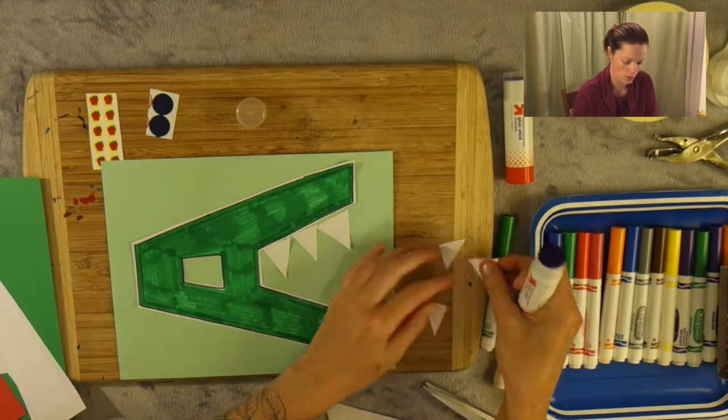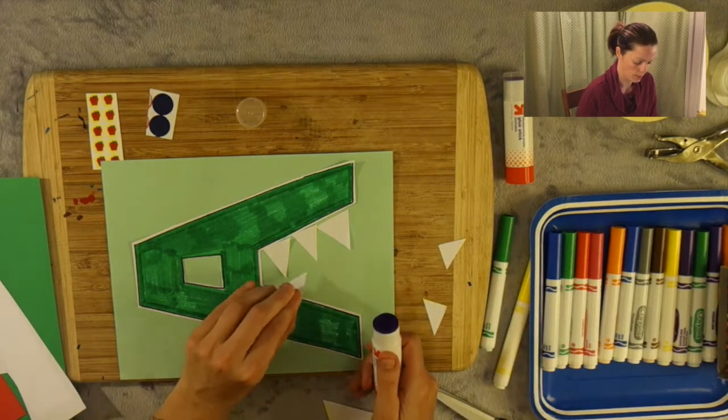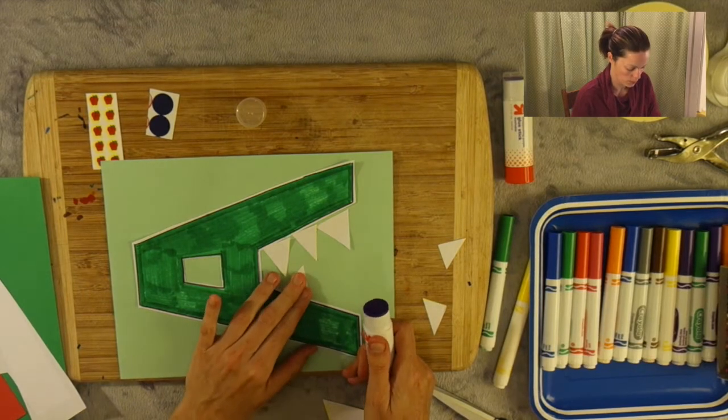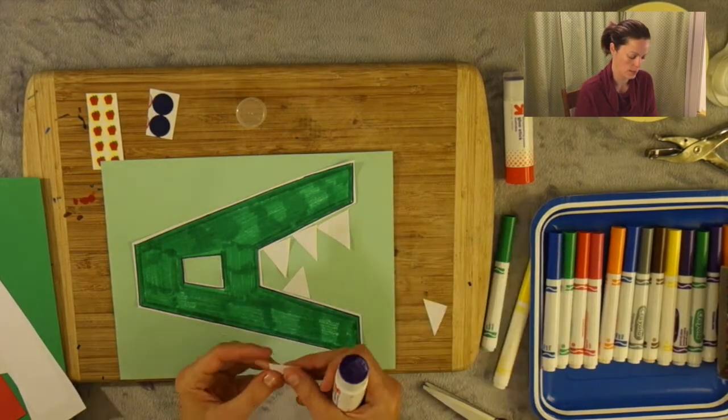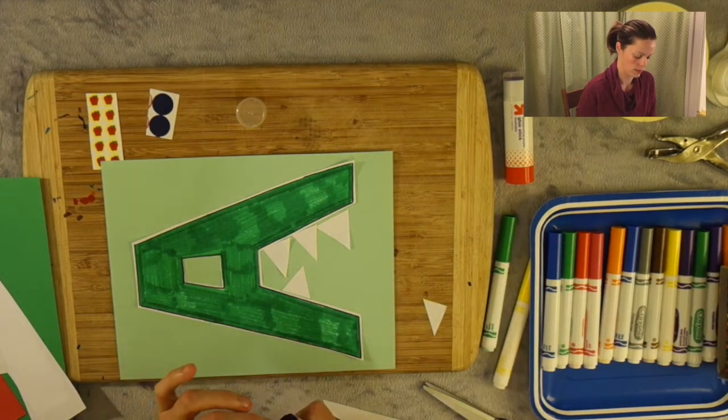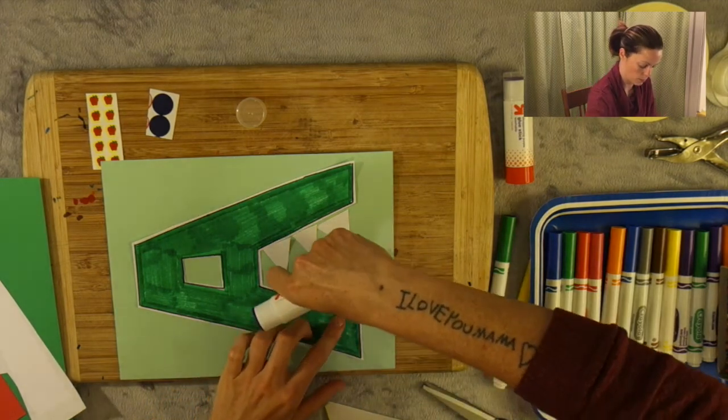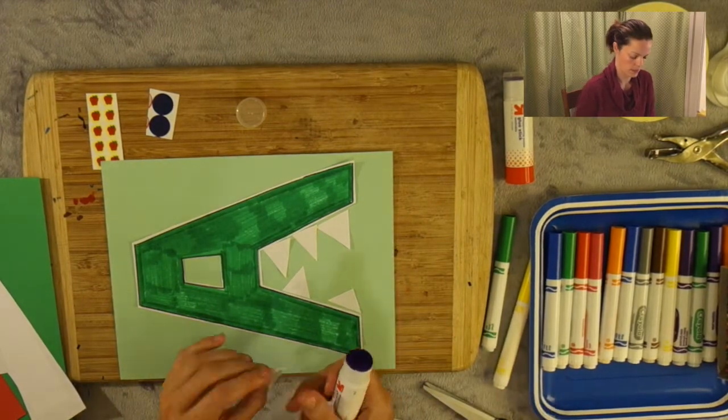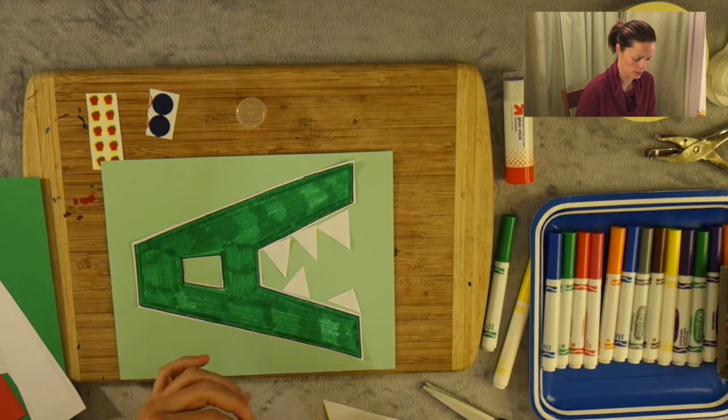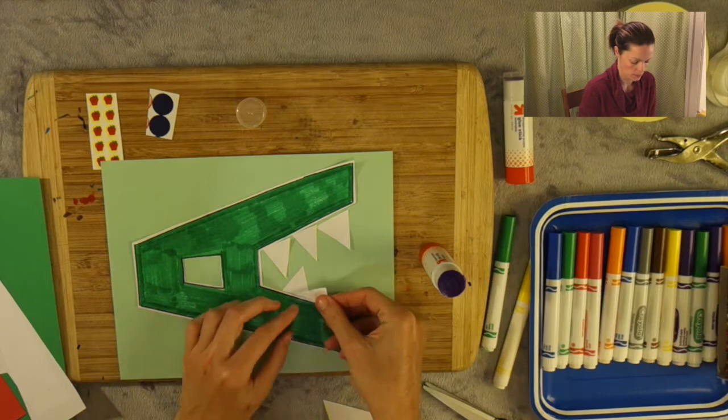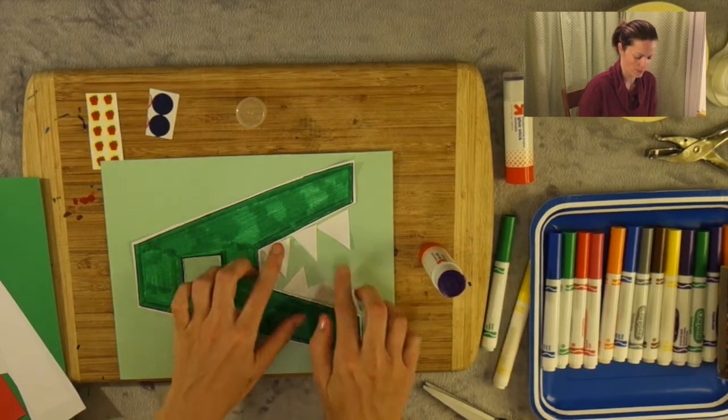So let's go ahead and do it again. Let's grab our triangles, put some glue on them, and put them right there. This alligator is looking very fierce if you ask me. Maybe I'll put one like that, and then another one. Like so. Perfect.